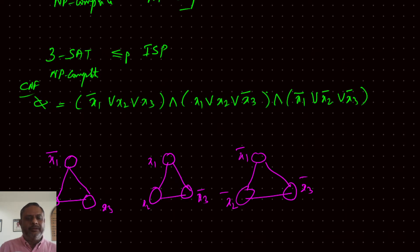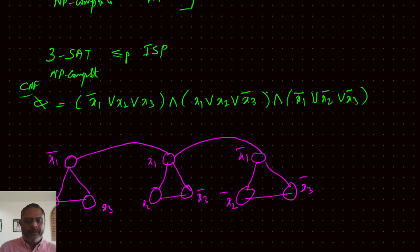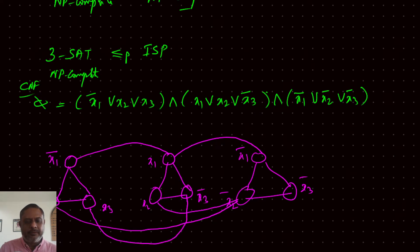The second thing is: if X1 is 0, we cannot say X1 is 1 at the same time. Therefore, if X1 is selected in one triangle, X1-bar should not be selected in another. So we add edges between complementary literals across triangles: between X1 and X1-bar, between X2 and X2-bar, and between X3 and X3-bar.